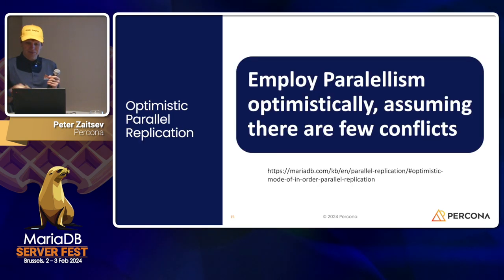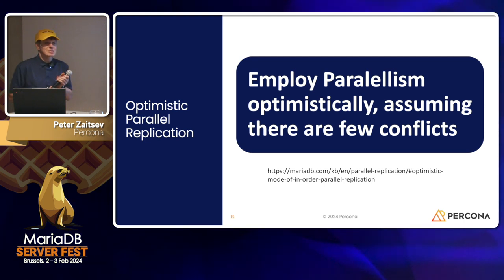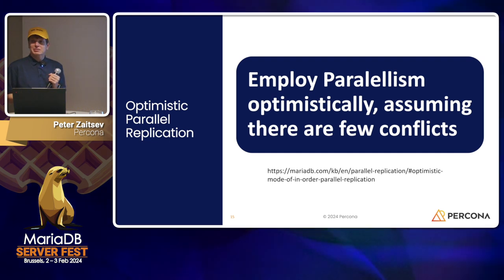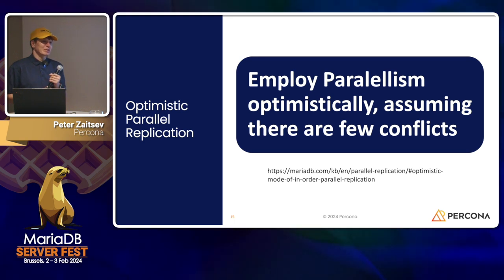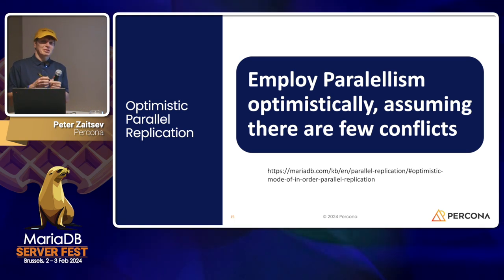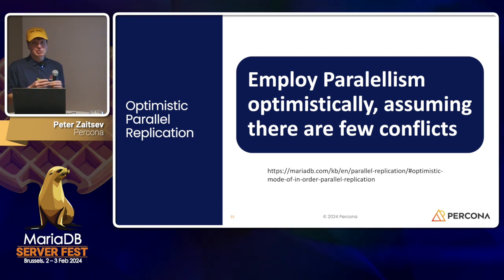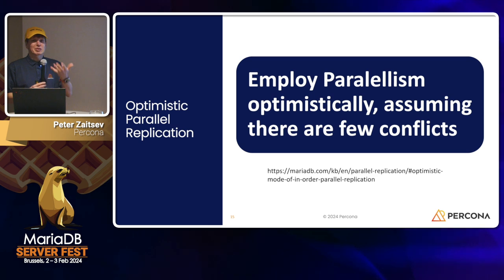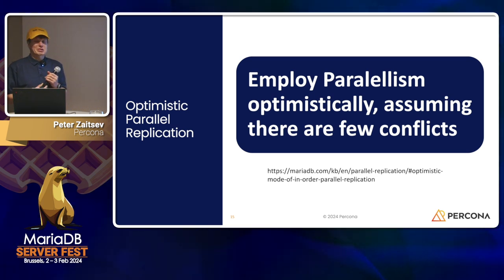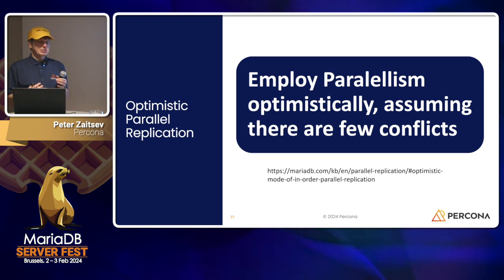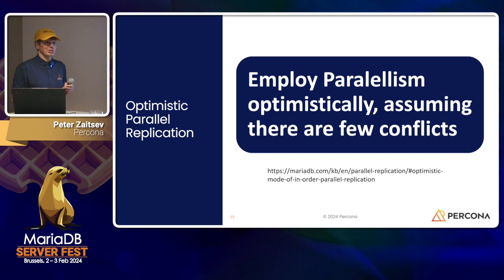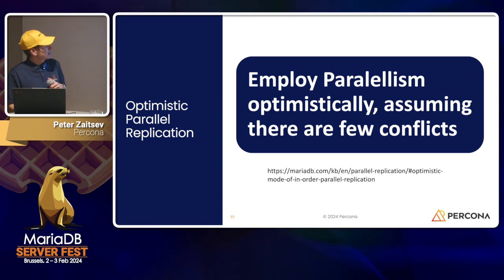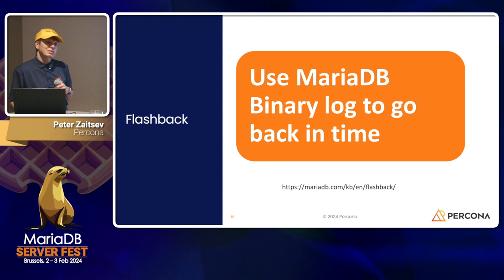The next feature is optimistic parallel replication — a pretty cool and creative feature. In practice, with workloads where many tenants are modifying non-conflicting data, this allows much better parallel replication compared to what was actually committed on the master.